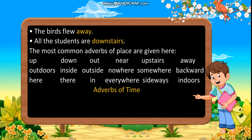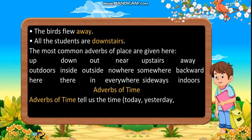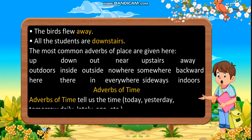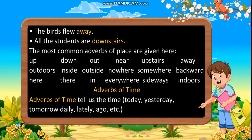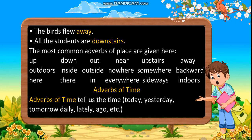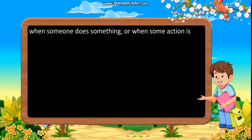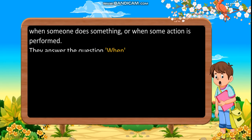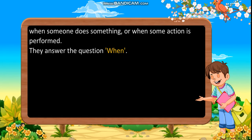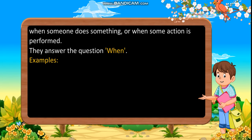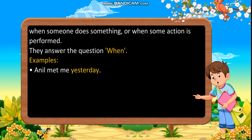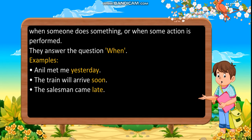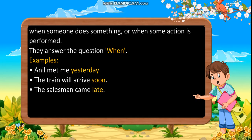Adverbs of time tell us the time — today, yesterday, tomorrow, daily, lately, ago, etc. — when someone does something or when some action is performed. They answer the question: when. Examples: Anil met me yesterday. The train will arrive soon. The salesman came late.